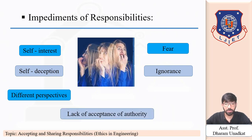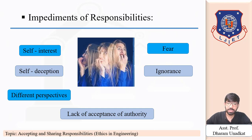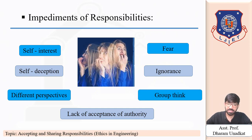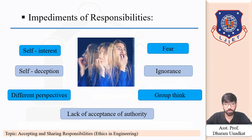Sixth is lack of acceptance of authority. The engineers' code of ethics emphasizes the importance of engineers exercising independent, objective judgment in performing their function — this is called professional autonomy. But most engineers work under the supervision of their bosses, so it is difficult for them to work with independent and objective judgment. This results in their inability to exercise their responsibility as an engineer.